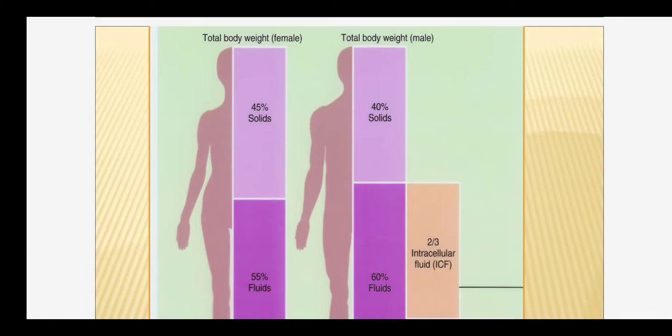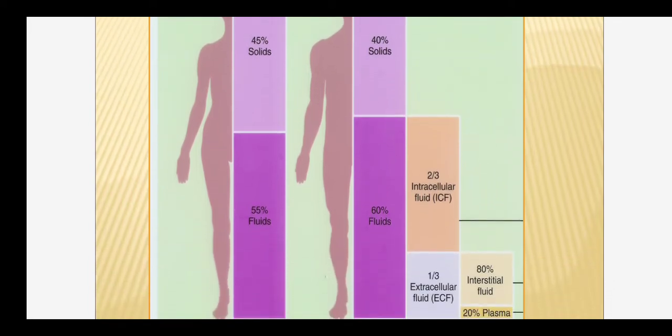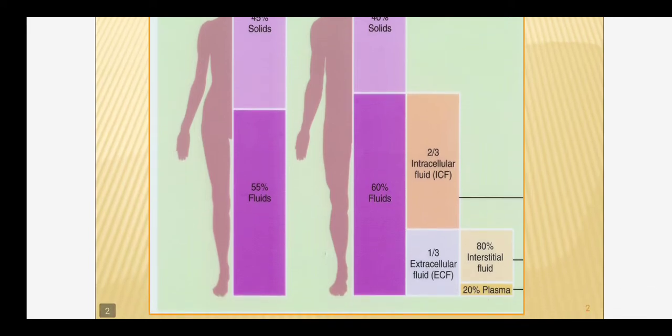Now, the 60% fluid in the diagram is divided into intracellular fluid and extracellular fluid. So the total water content in the body is divided into two compartments — one is inside the cell, another is outside the cells. Two-thirds is inside the cells, one-third is outside the cells. The one-third extracellular fluid is again divided into interstitial fluid and plasma.